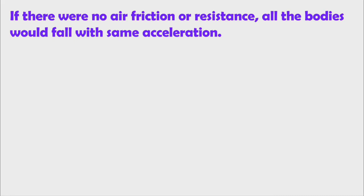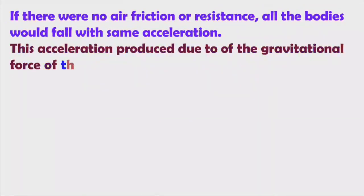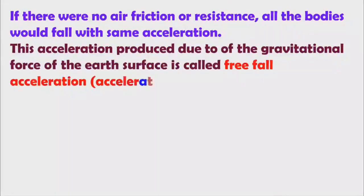Small g does not depend on the mass of the body. You can take a higher mass object or a lower mass object — if there is no air friction or resistance, all bodies would fall with the same acceleration. This acceleration produced due to the gravitational force of the earth's surface is called free fall acceleration.